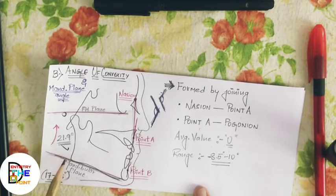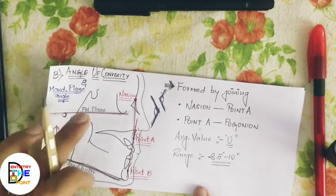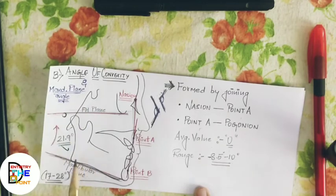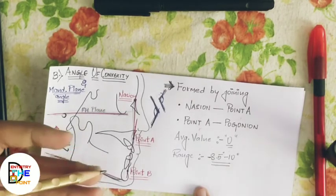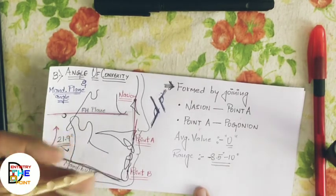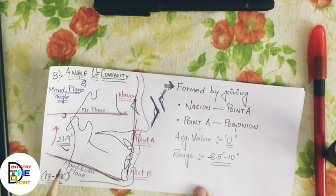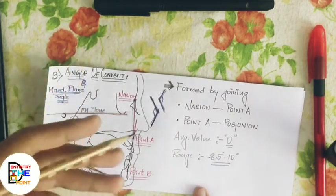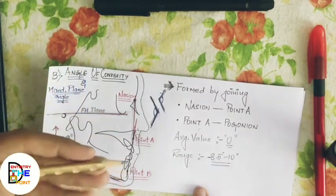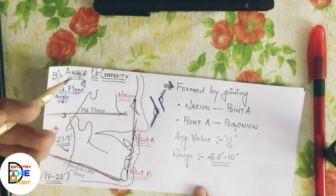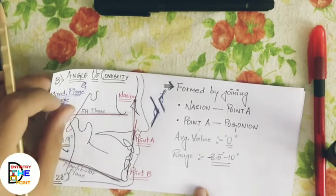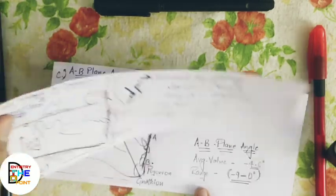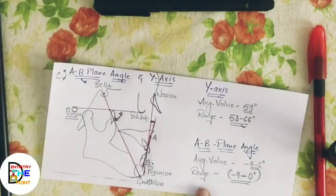If the mandibular plane angle is increased, the patient is a vertical grower with a hyperdivergent facial pattern. If the angle is decreased, the patient is a horizontal grower with a hypodivergent facial pattern.